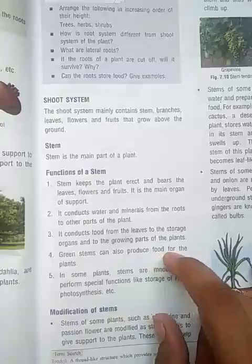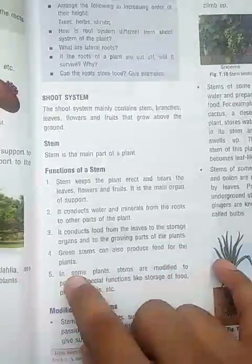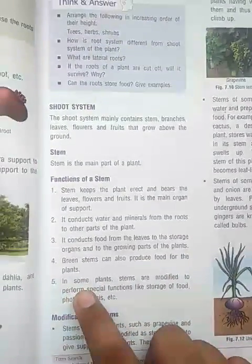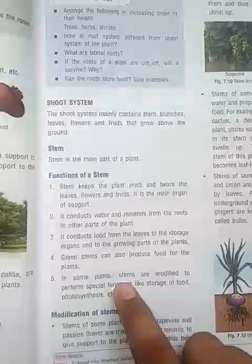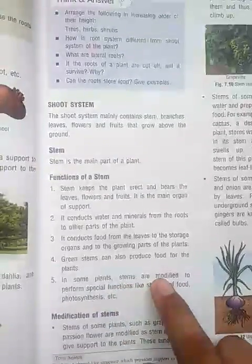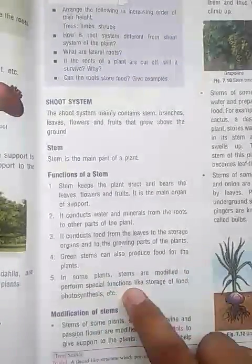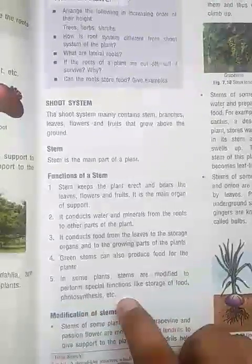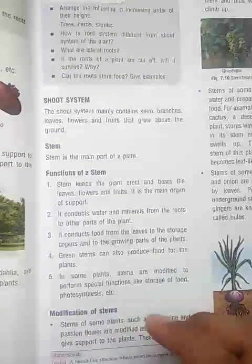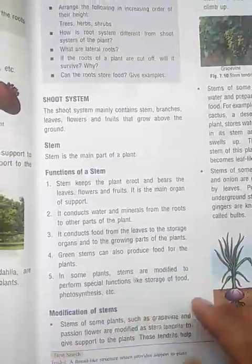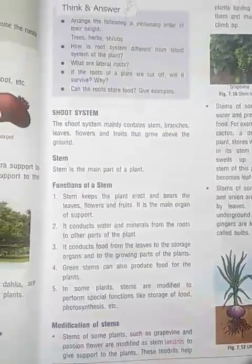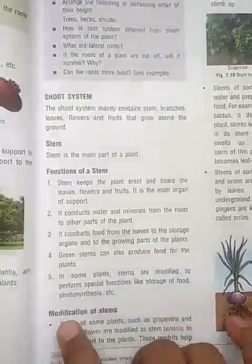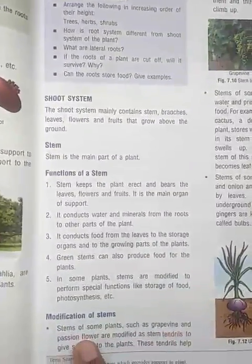The stem also conducts food from the leaves to storage organs and to the growing parts of the plant. Green stems can also prepare food for the plant body. In some plants, stems are modified to perform special functions like food storage. These are the special types of functions performed by the stems.